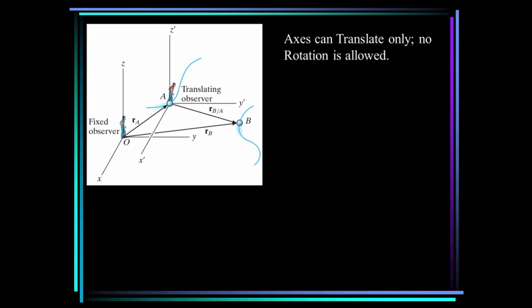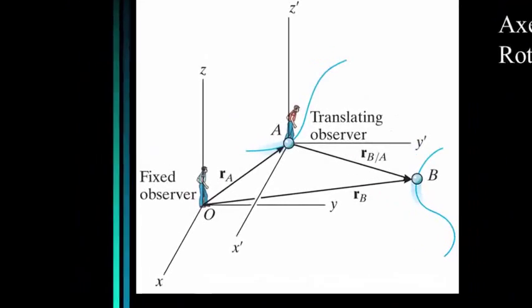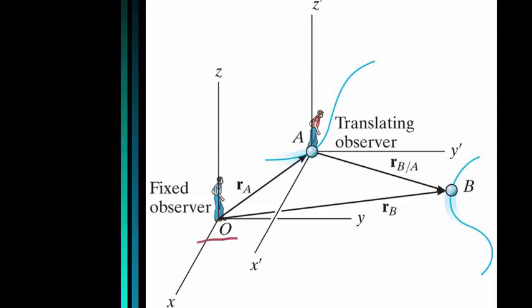It's important to note that axes can translate only — no rotation is allowed. So let's look at this diagram here. We have a fixed observer at O. We have another observer at A that is moving along this path, and that observer has a coordinate system attached to him. And there's another particle B moving along this path. How can we describe the motion of particle B with respect to the translating observer A?